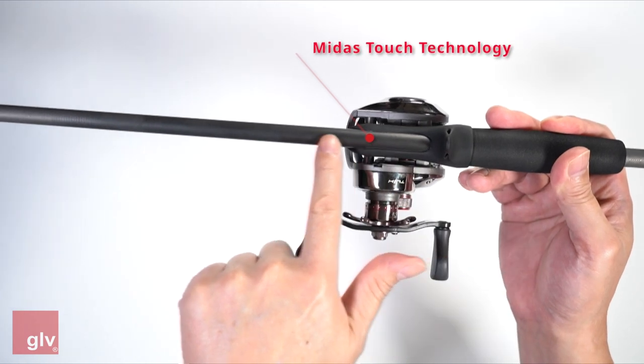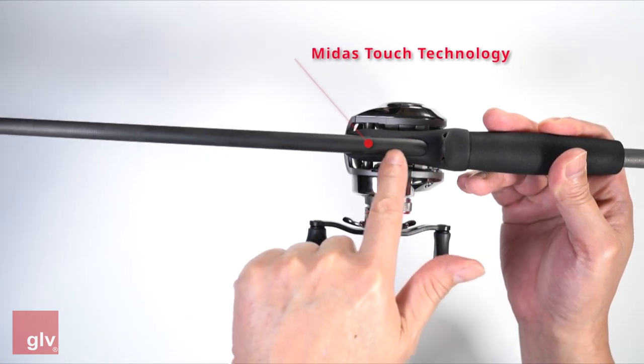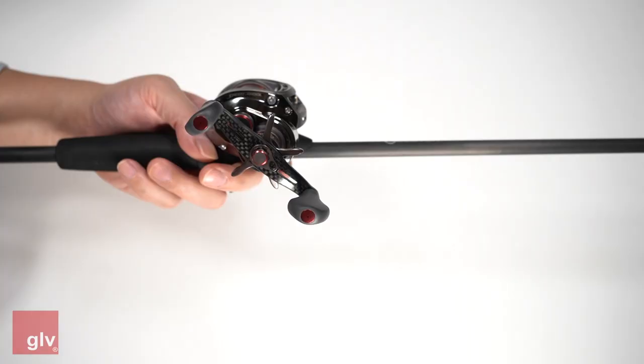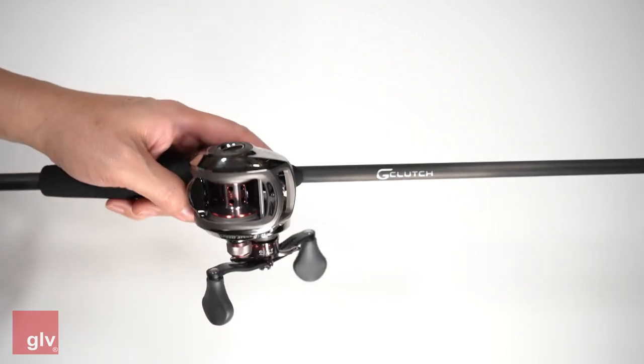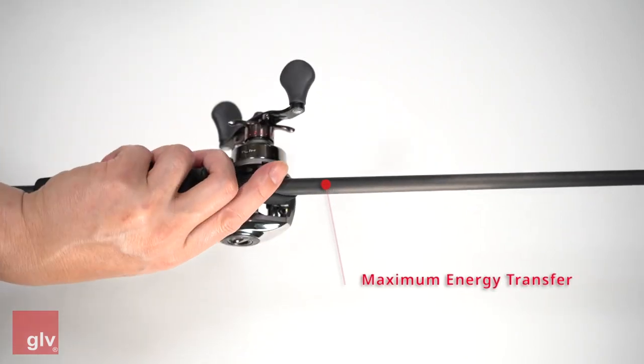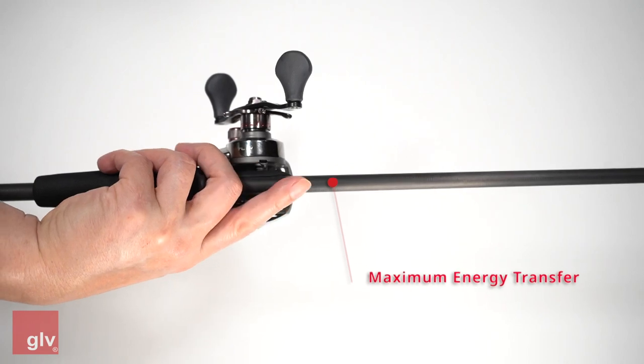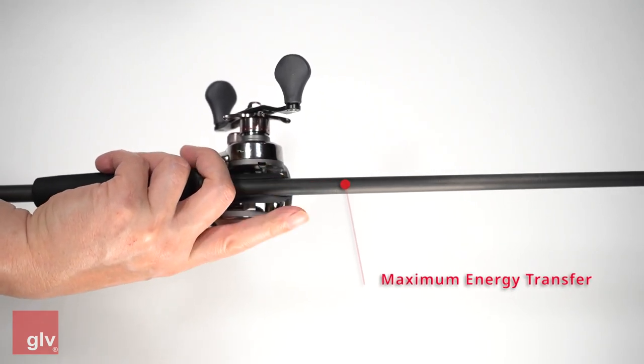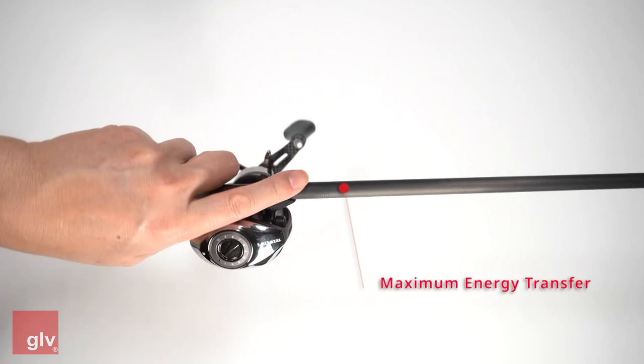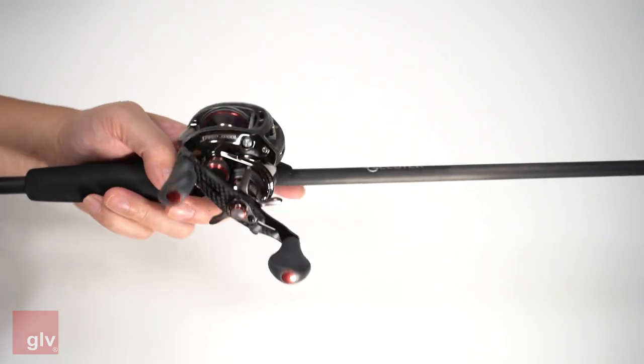The entire rod blank is run straight through the G-Clutch handle with nothing added in between, which maximizes energy transfer from the tip of the rod to your hand. When a fish bites, you'll know it faster and more certainly with G-Clutch than with any other handle system.